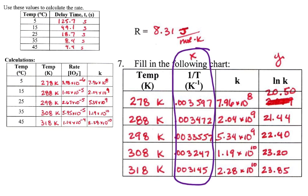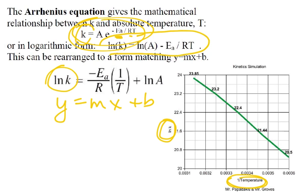And we get our graph over here. And this is actually from our data. So, we take our ln of k and our 1 over the temperature, and we get that nice straight line.